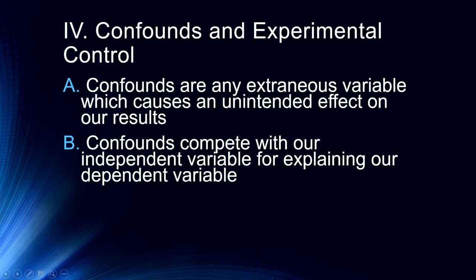Confounds are any extraneous variable which can cause an unintended effect on our results. This can be differences between groups in a between-subjects design — more males in one group and more females in another, or more seniors in one group and more freshmen in another. Technically, confounds compete with our independent variable for explaining our dependent variable. We want the only explanation for any change in our dependent variable to be the independent variable, so a confound makes it harder to establish that cause and effect relationship.